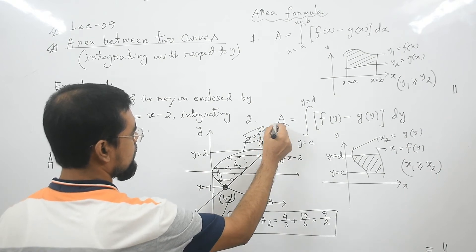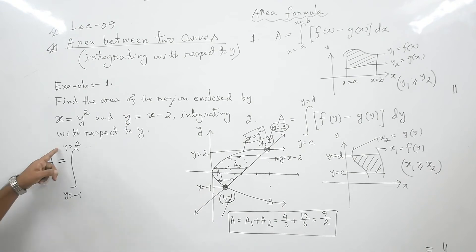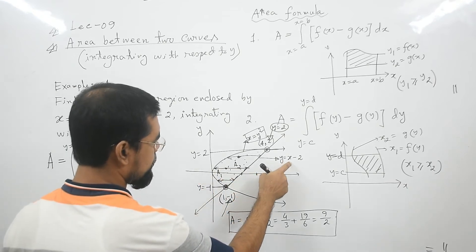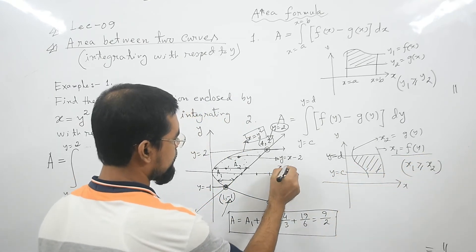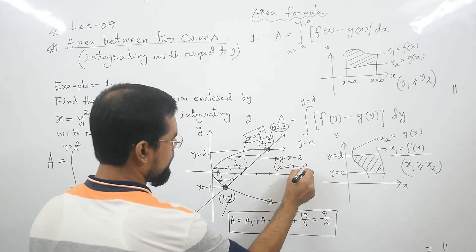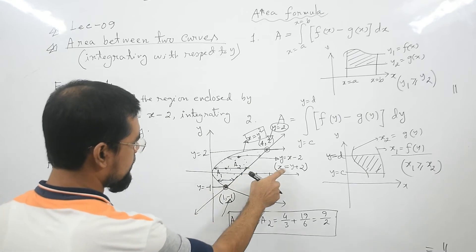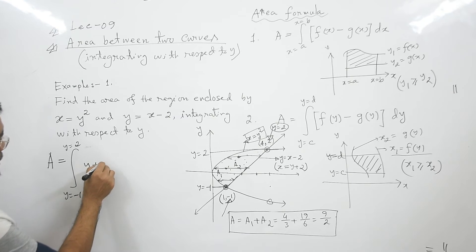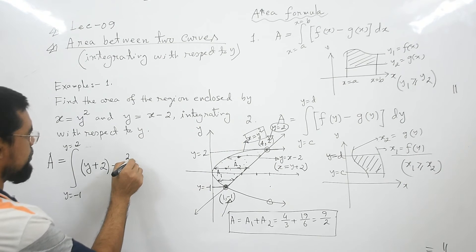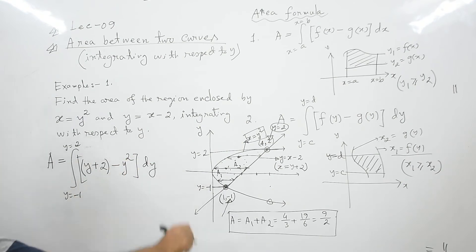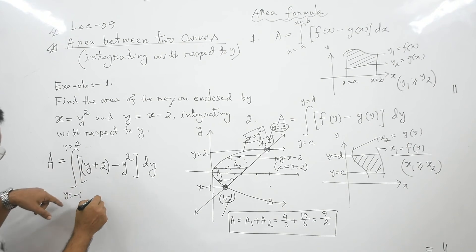At the upper intersection point y equals 2 and at the lower y equals negative 1, so we integrate from negative 1 to 2. The curve on the right must be written as x equals a function of y. For y equals x minus 2, rewrite as x equals y plus 2. The curve on the left is x equals y squared. So the integrand is (y plus 2) minus y squared, integrated with respect to y.